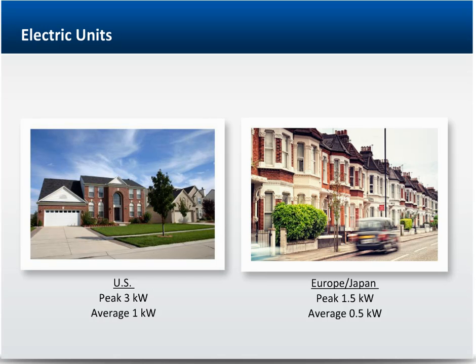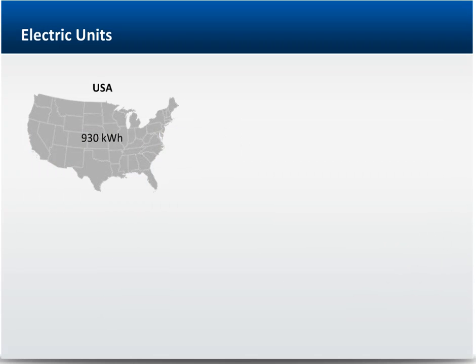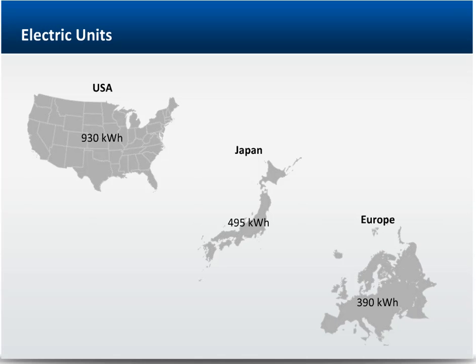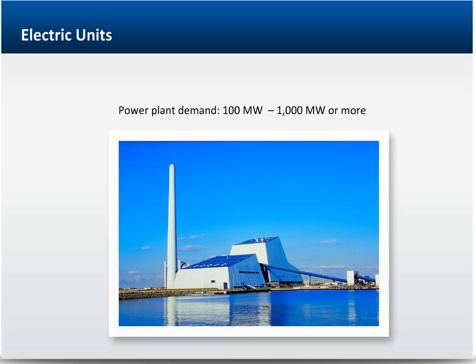Homes in Europe and Japan typically have demands that are only half this amount. Average monthly household usage is about 930 kilowatt-hours in the U.S., 495 kilowatt-hours in Japan, and 390 kilowatt-hours in Europe. Industrial facilities are much larger in all regions of the world, with demands ranging from 500 kilowatts to as large as a few megawatts. Utility-scale power plants typically range in size from 100 megawatts to larger than 1,000 megawatts.